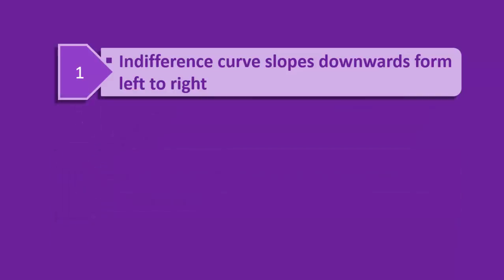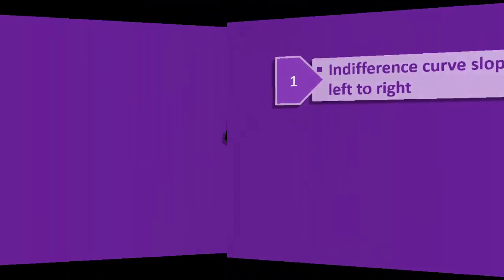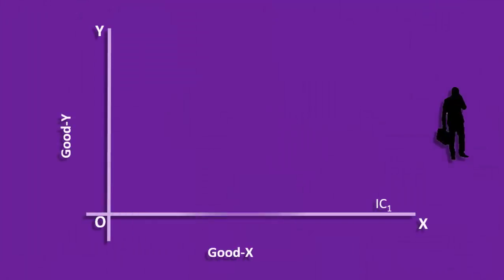Let us now examine the first property. Indifference Curve slopes downwards from left to right. Indifference Curve has a negative slope. As the consumer slides down from left to right, he gives up a few units of good Y in order to acquire one additional unit of good X.